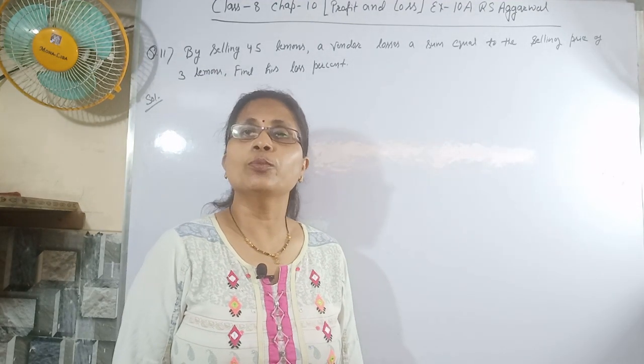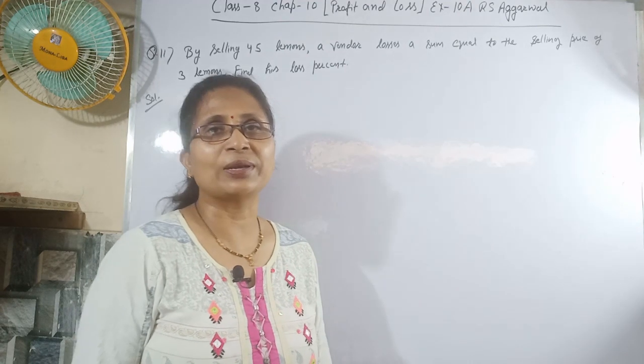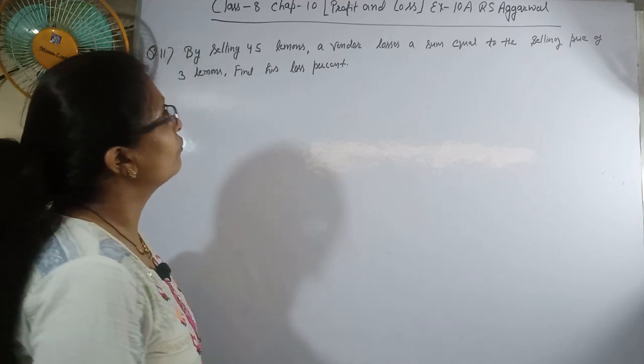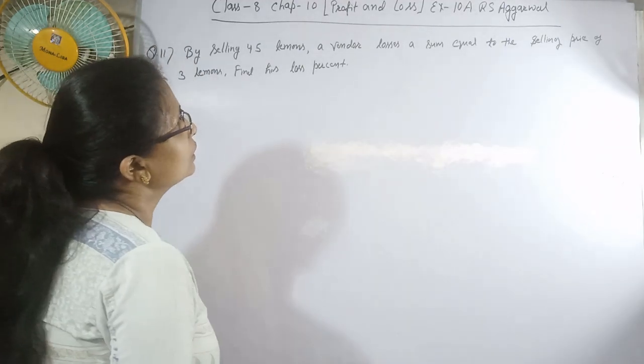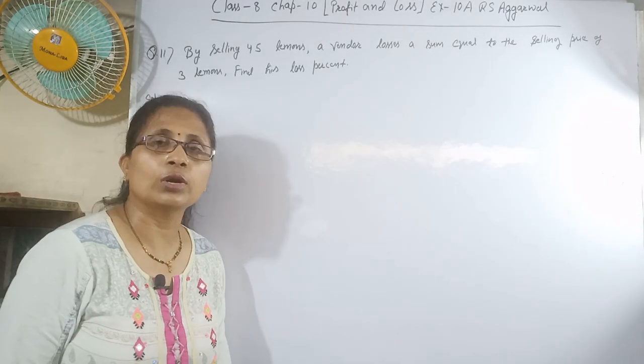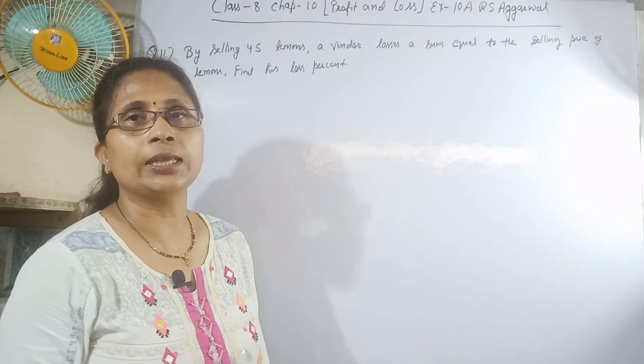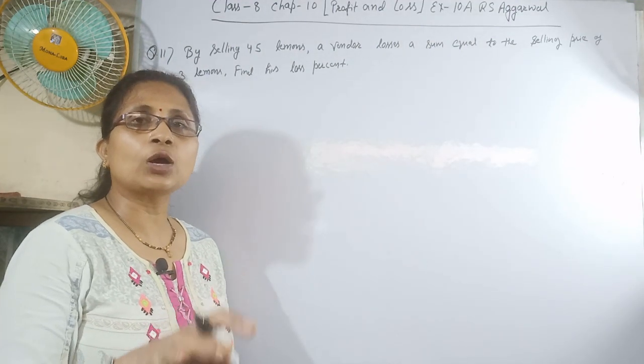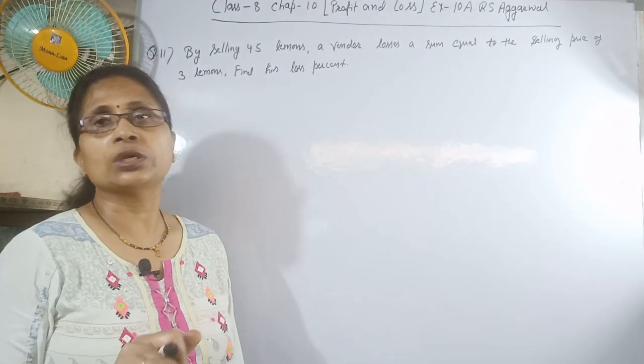Chapter 10 is Profit and Loss, question number 11. The question states: by selling 45 lemons, a vendor loses a sum equal to the selling price of 3 lemons. This means when the vendor sells 45 lemons, the loss equals the selling price of 3 lemons.